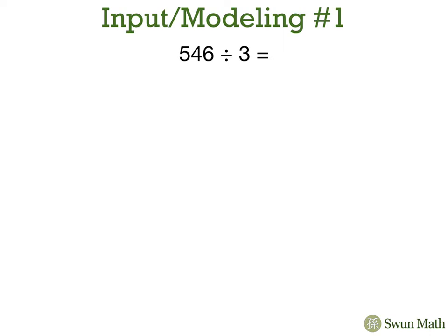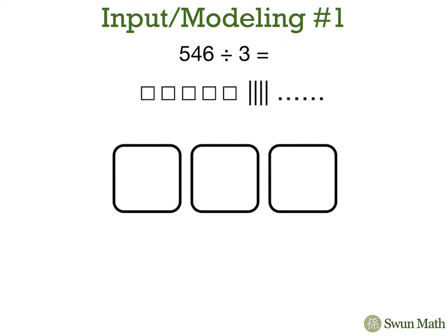We have 546 divided by 3. Here's 500, 4 tens, 6 ones, and our three groups.